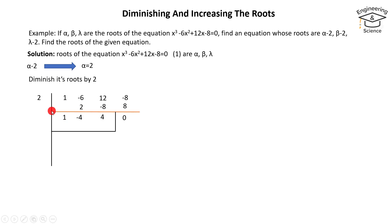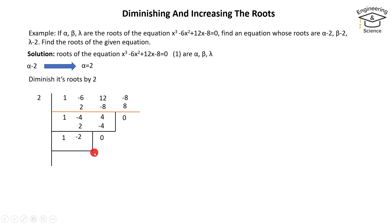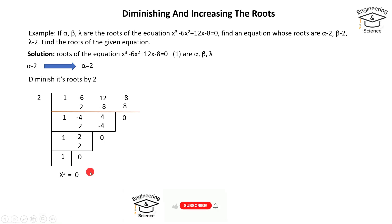Write 1. Then 1 multiplied by 2 equals 2. The sum of minus 4 and 2 equals minus 2. Then minus 2 multiplied by 2 equals minus 4. The sum of 4 and minus 4 equals 0, so we remove the term in x. Again, 1 multiplied by 2 equals 2, and minus 2 plus 2 equals 0, removing the x squared term. Only x cubed remains, giving the transformed equation x cubed equals 0.